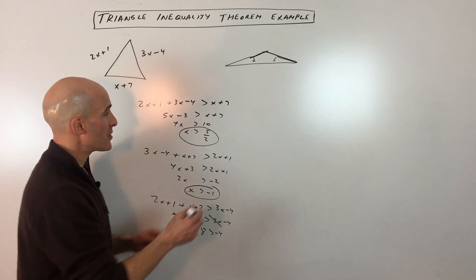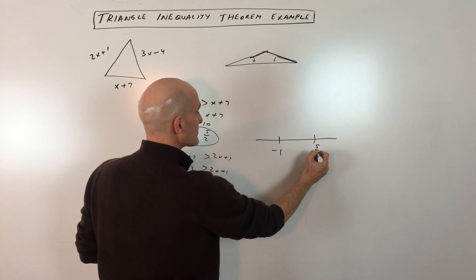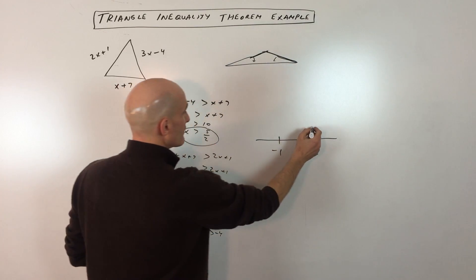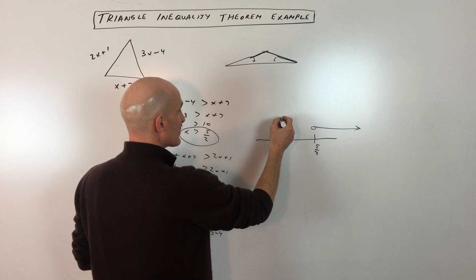So we're just looking at these two here. Now if we graph these on the number line, here's negative 1, here's 5 halves. If you're greater than 5 halves, and you're also greater than negative 1.